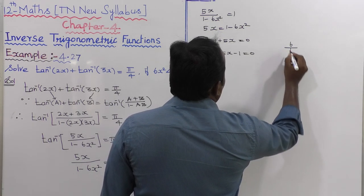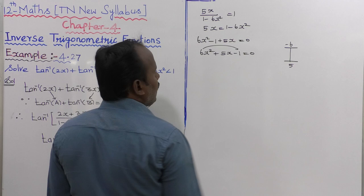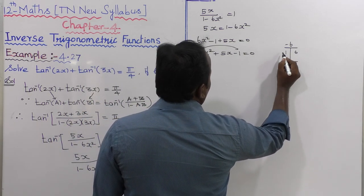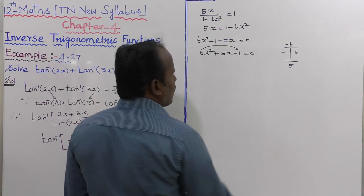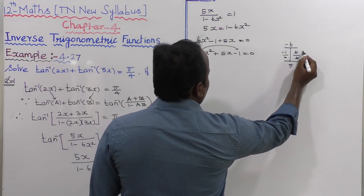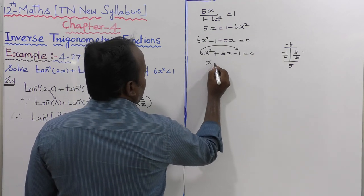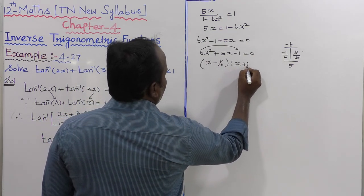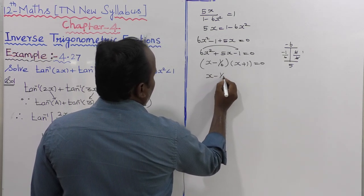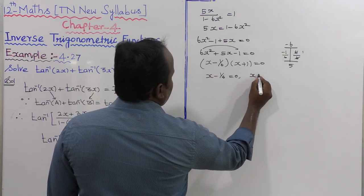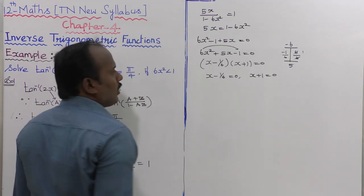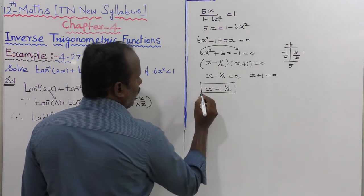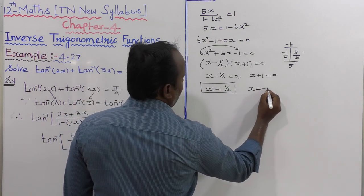Factoring 6x squared plus 5x minus 1 equals 0 gives two solutions: x equals 1 by 6, and x plus 1 equals 0, so x equals minus 1.